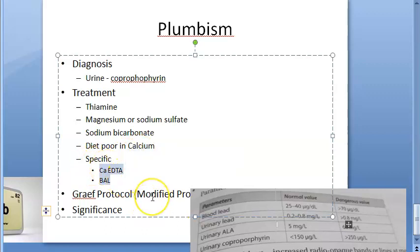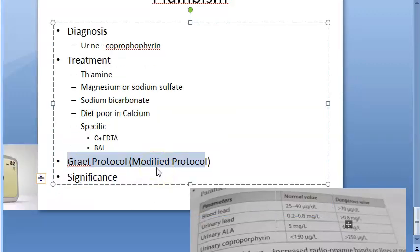Now let's move on to the Graef protocol, which is modified protocol for treating plumbism, chronic lead poisoning. If it is severe acute poisoning, then if there is encephalopathy and without encephalopathy, what you should do.